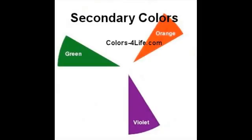Secondary colors are orange, green, and violet, which is described as purple. Secondary colors are created by mixing two of the primary colors. The secondary color palette combinations are: red and yellow equal orange, blue and yellow equal green. So the secondary colors are orange, green, and violet.